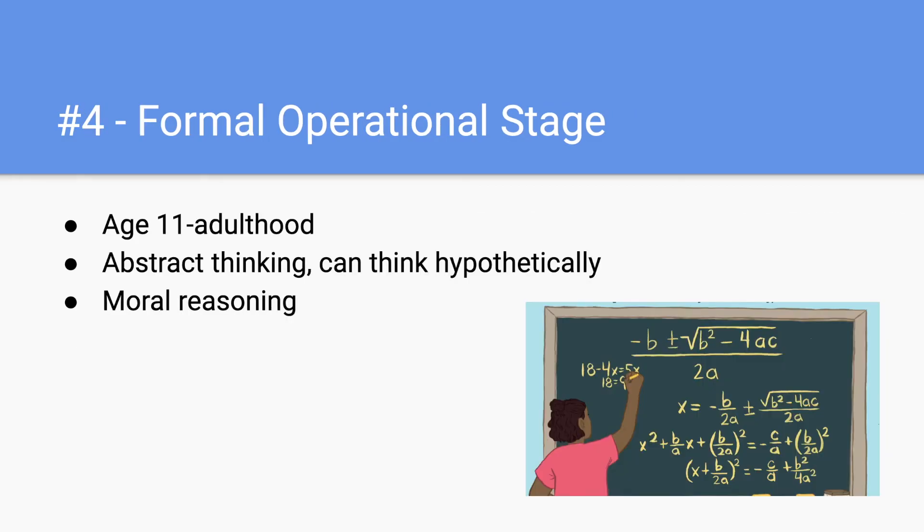Lastly, we have the formal operational stage, and this goes from the age of 11 until adulthood. Children in this stage exhibit abstract thinking and can think hypothetically. They're able to reason, to hypothesize, to experiment, and really begin to understand the world in different ways. Children in this stage are also able to engage in problem solving.